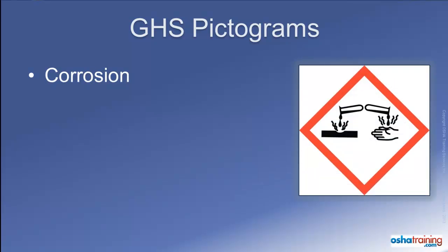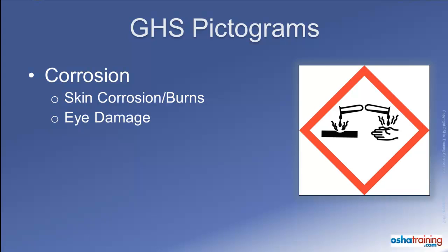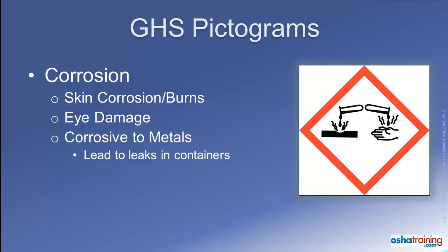The corrosion pictogram will appear on labels of containers of corrosive chemicals and products. Getting something corrosive onto your skin could cause a chemical burn, and the same applies if it gets into your eye. These products can also be corrosive to metals, which means they could corrode containers and other articles made from metal, causing them to break or leak.